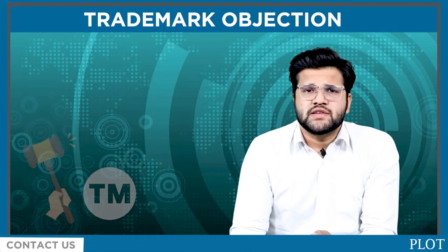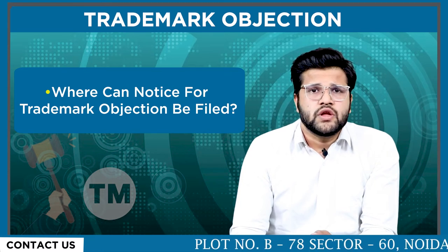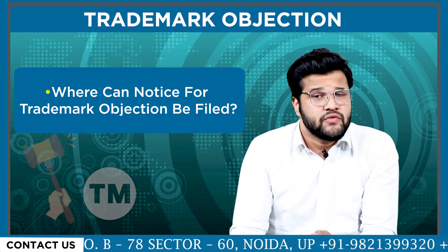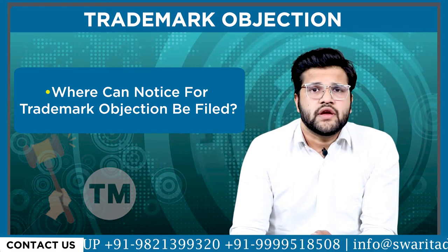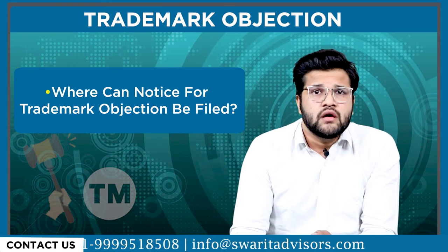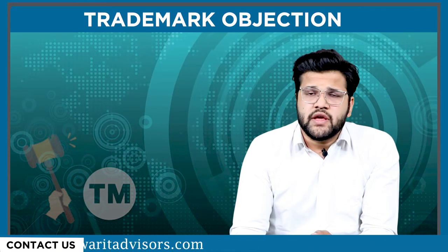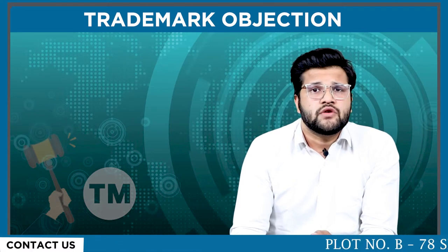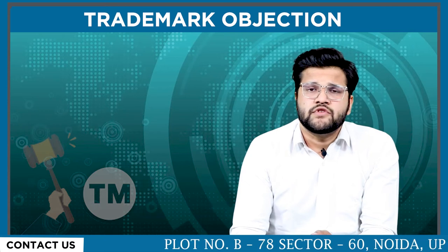So now let's understand where the notice for trademark objection can be filed. The notice for the purpose of trademark objection can be filed at the trademark registry where the application for the trademark in conflict has been earlier filed. Thus, if an application is filed at the Delhi office, then the proceeding for objection of trademark should also be initiated at the Delhi office only.